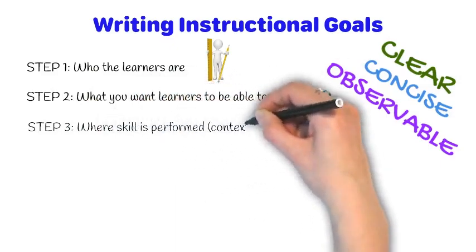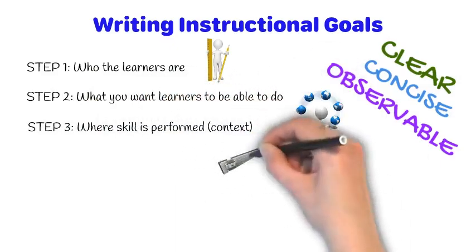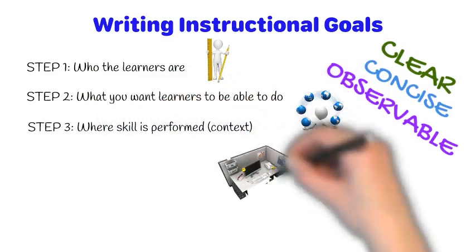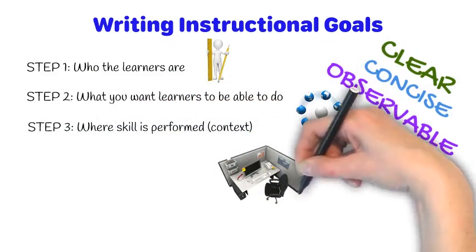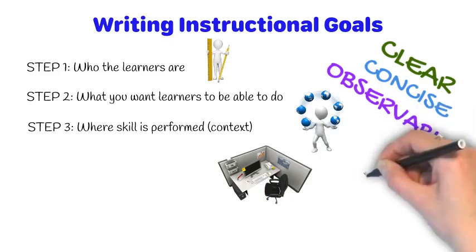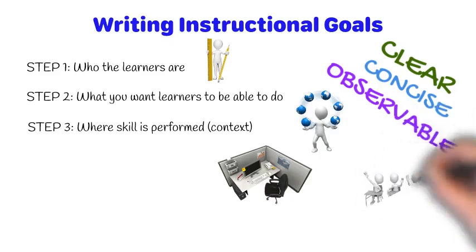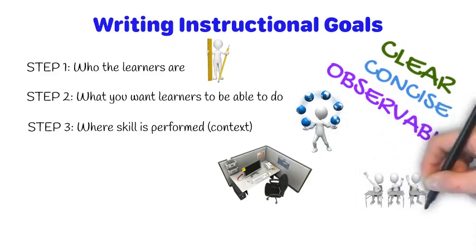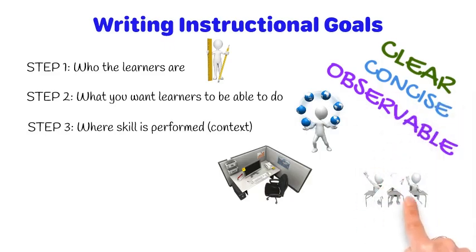Step 3 is to articulate the context in which the skills will be performed. What is important here is that you're not specifying what the learners will do in the classroom. Rather, you specify what you want them to do once they have completed the training.